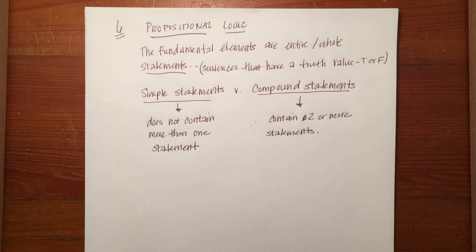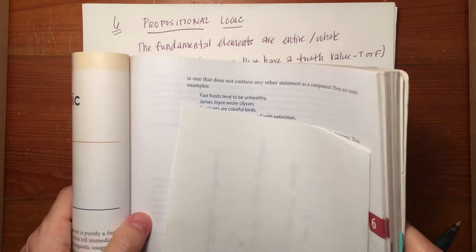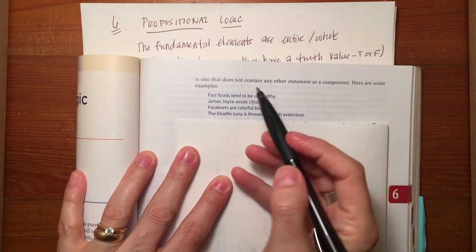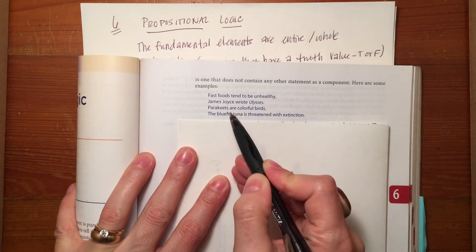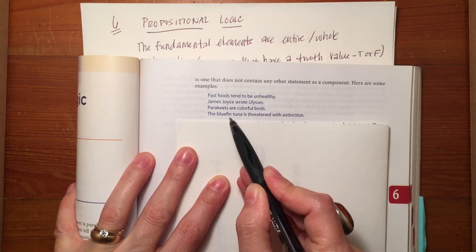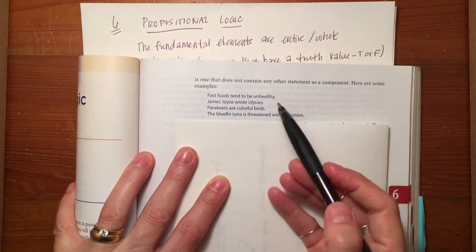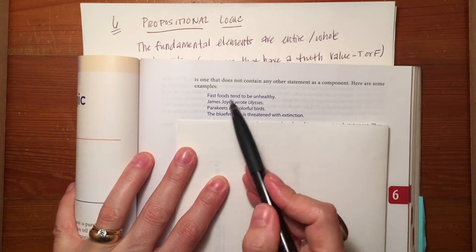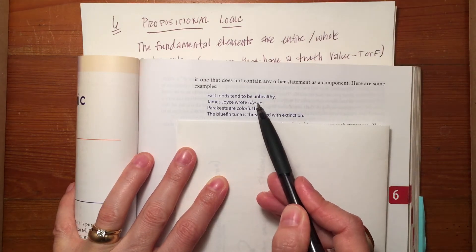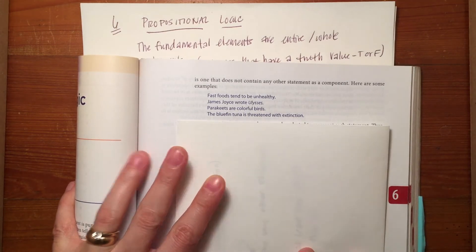If you take a look at page 311 in your textbook, I'll show you some examples of just simple statements. So as you can see, fast foods tend to be unhealthy. James Joyce wrote Ulysses. Parakeets are colorful birds. The bluefin tuna is threatened with extinction. So as you can see, these statements only say one thing. This is saying something about fast foods, something about James Joyce, something about parakeets, and something about the bluefin tuna.